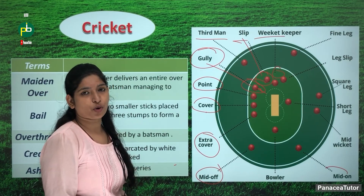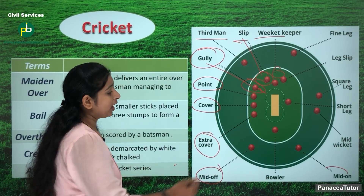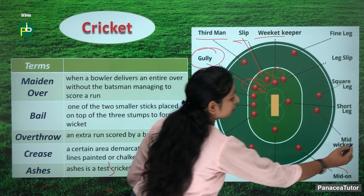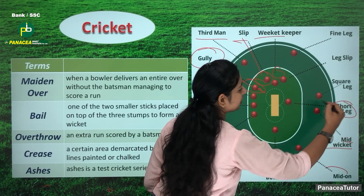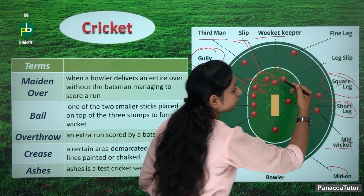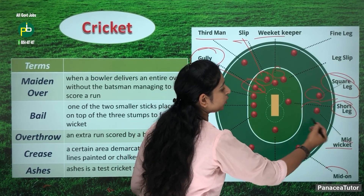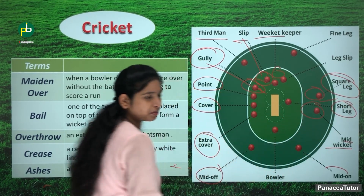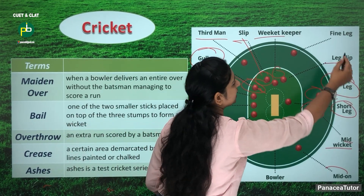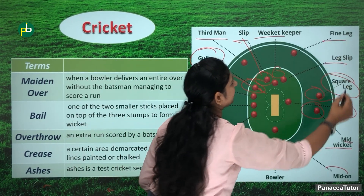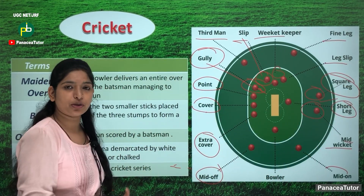These are all the fielding positions — the point of view is important. Mid wicket, short leg — this is also exam-relevant. Short leg and square leg. Leg slip and fine leg — what are these? These are all different fielding positions as per the cricket ground.